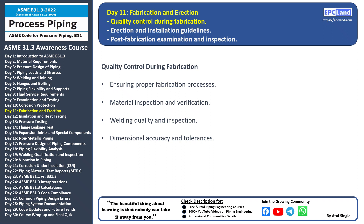Material properties, dimensions, and identification should be thoroughly checked. Welding quality and inspection: welds play a critical role in the strength and integrity of the piping system — welding procedures, techniques, and inspections must meet the specified standards. Dimensional accuracy and tolerances: precise measurements and adherence to tolerances are important to ensure proper fit and function of the piping components.